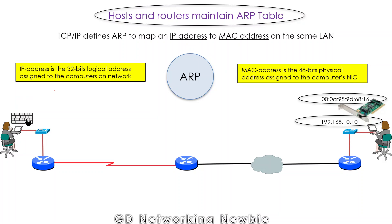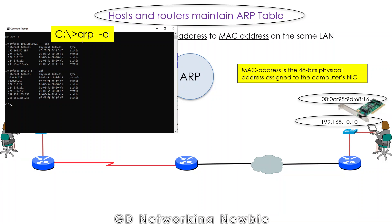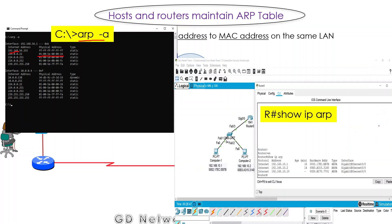The host as well as the router maintain an ARP table in their database. Once they have learned some MAC addresses using the ARP protocol, they store that information in their ARP table. On a Windows machine, you can use the command 'arp -a' to see that for every IP address, the corresponding MAC address is also noted. On a router, a similar command can be used to look up the IP and MAC address mapping.